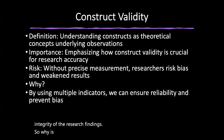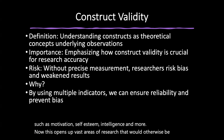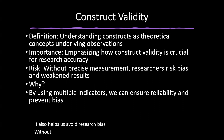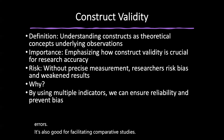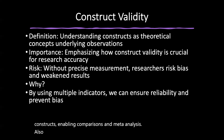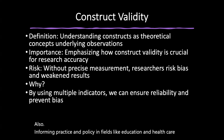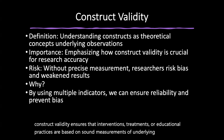Construct validity enables researchers to quantify and analyze abstract or latent variables such as motivation, self-esteem, and intelligence, opening up vast areas of research that would otherwise be inaccessible. It helps avoid research bias — without proper validation, biases can lead to incorrect interpretations of data. It also helps minimize both systematic and random errors, facilitates comparative studies by allowing different studies to measure the same constructs for meta-analyses, and informs practice and policy by ensuring interventions and treatments are based on sound measurements of underlying constructs.